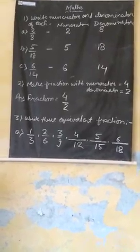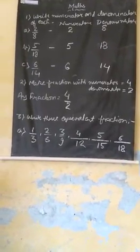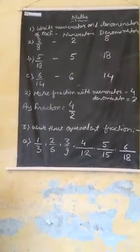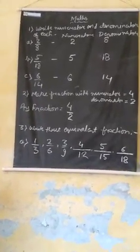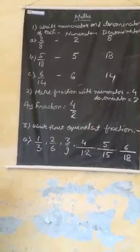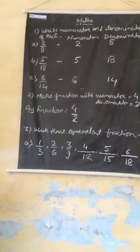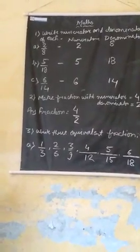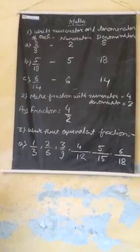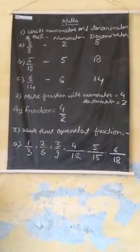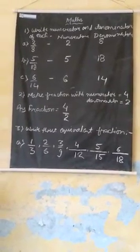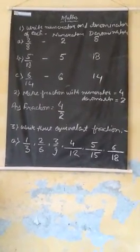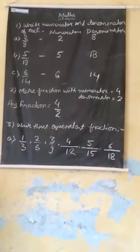Equivalent fractions are equal to the same number. We write the table of 1: 1, 2, 3, 4, 5, 6. And we write the table of 3: 3, 6, 9, 12, 15, 18. So 1/3, 2/6, 3/9, 4/12, 5/15, and 6/18 are all equal to the same number — they are equivalent fractions.